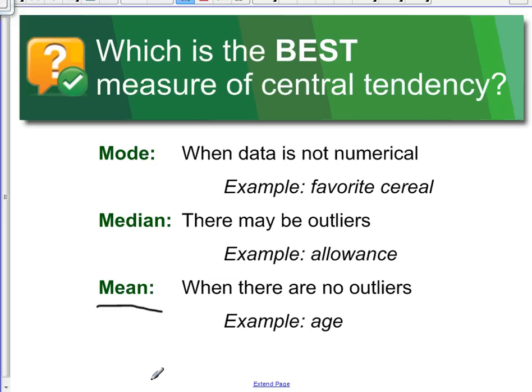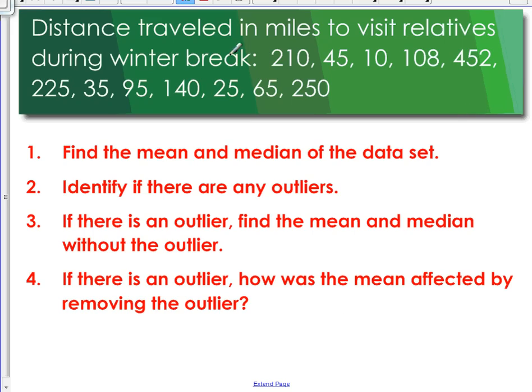Alright, so if you have any questions, I know I already flashed this example. If you want some extra practice, here's a really good way to, a really good problem to practice, to practice using an outlier and also to think about when it would be the best, or what measure of central tendency would be the best.